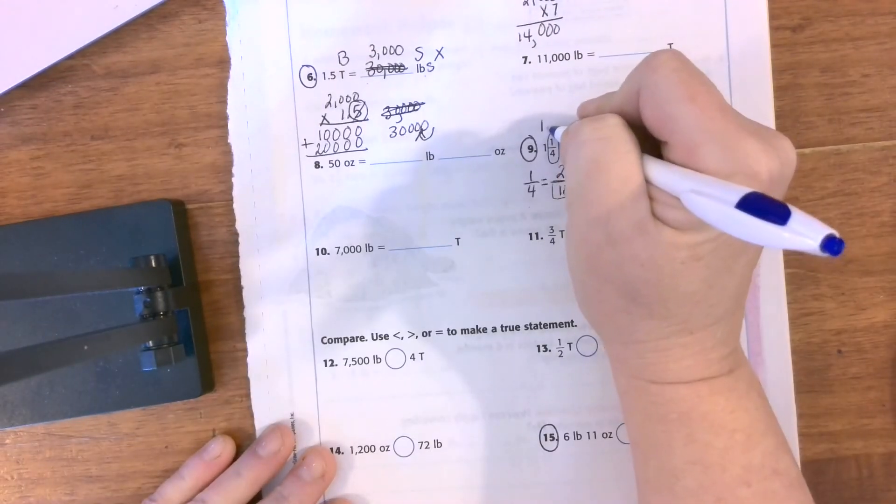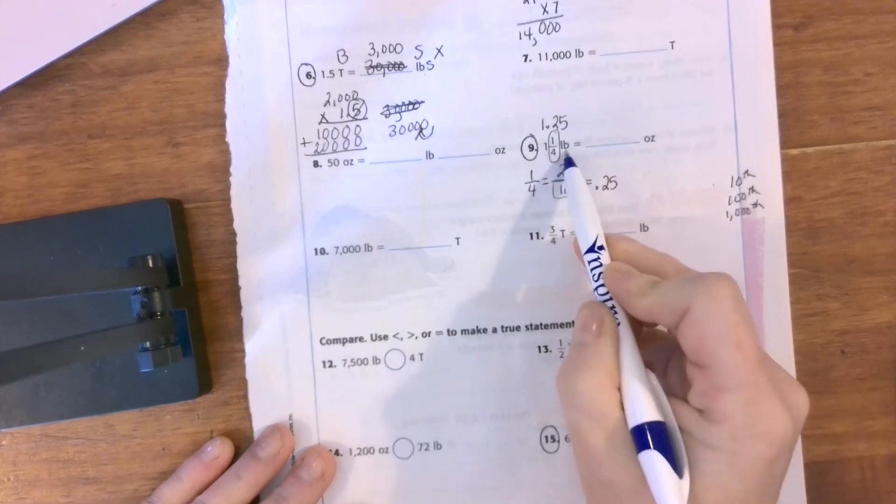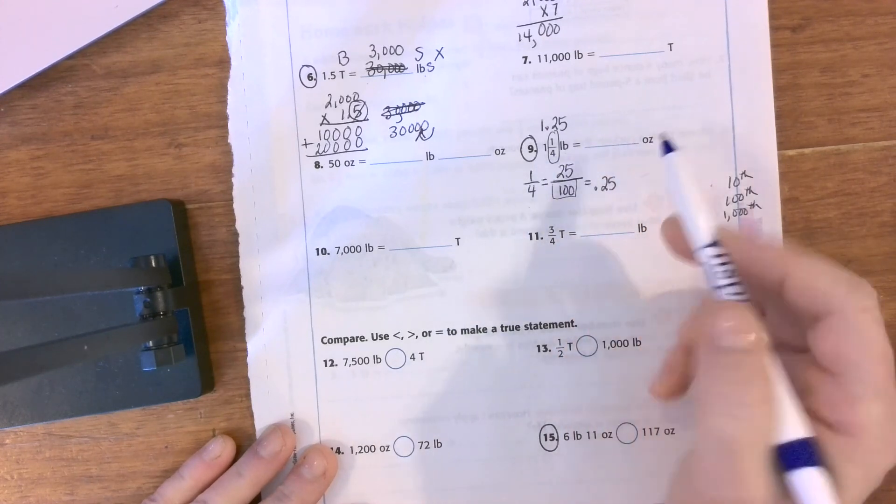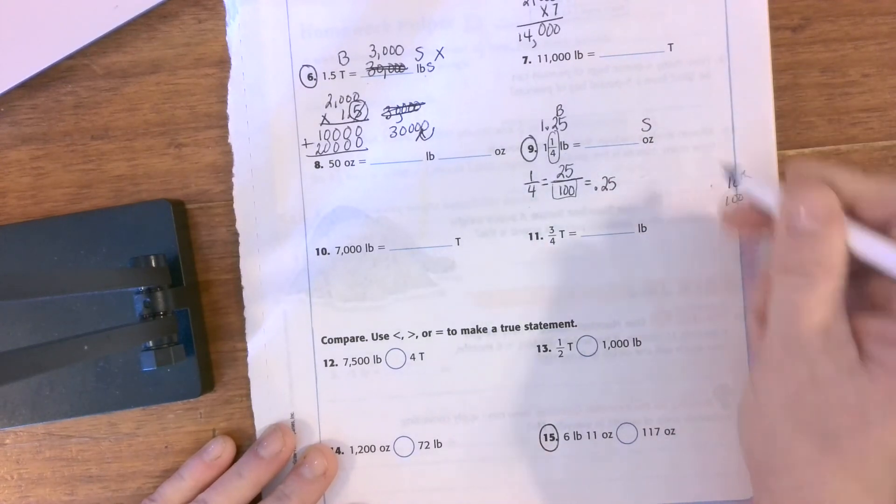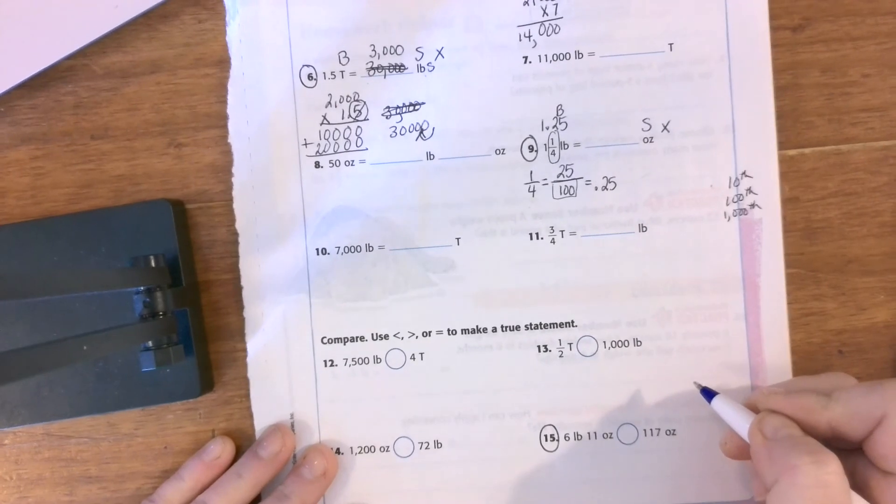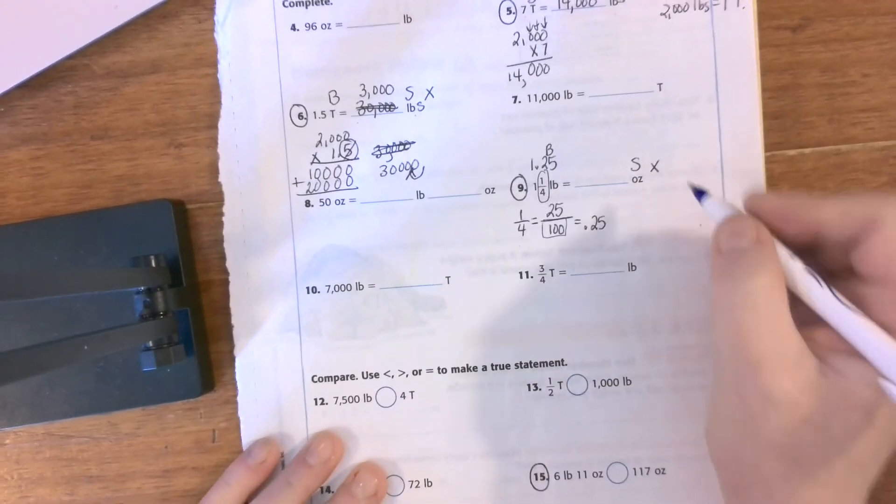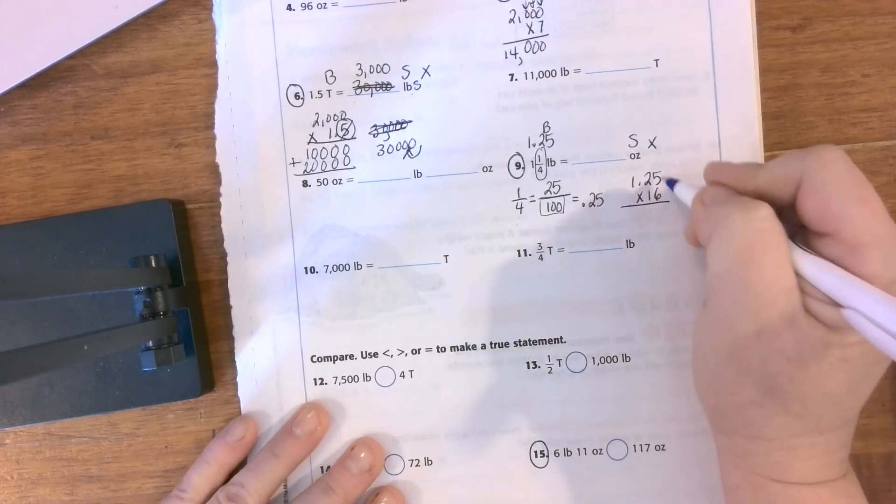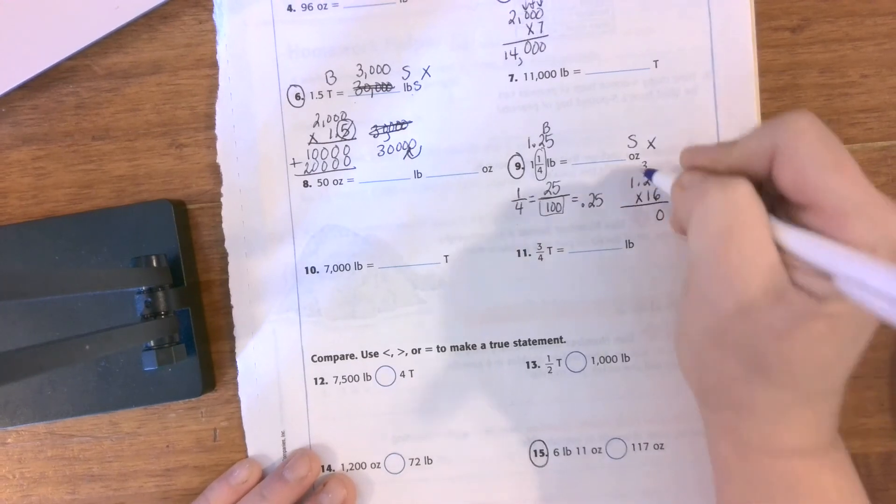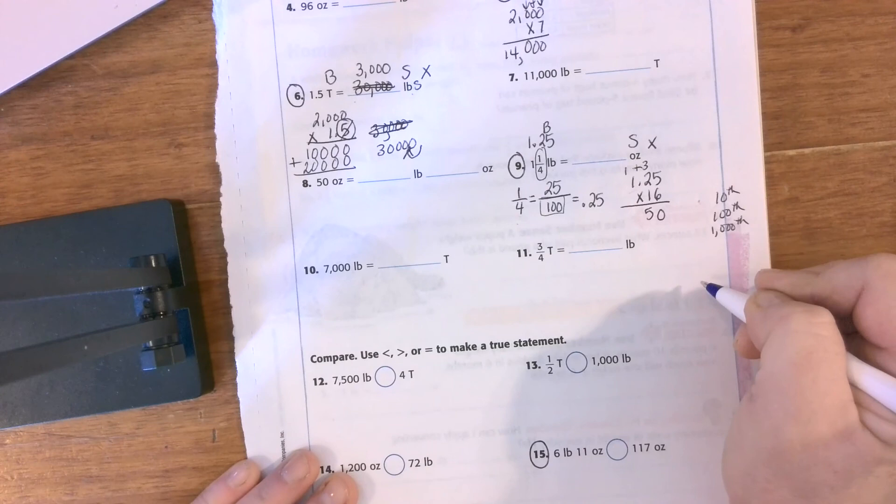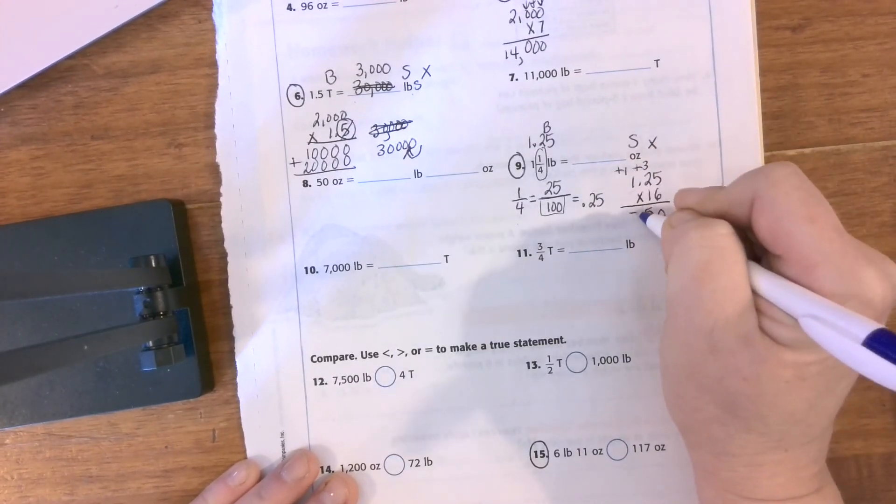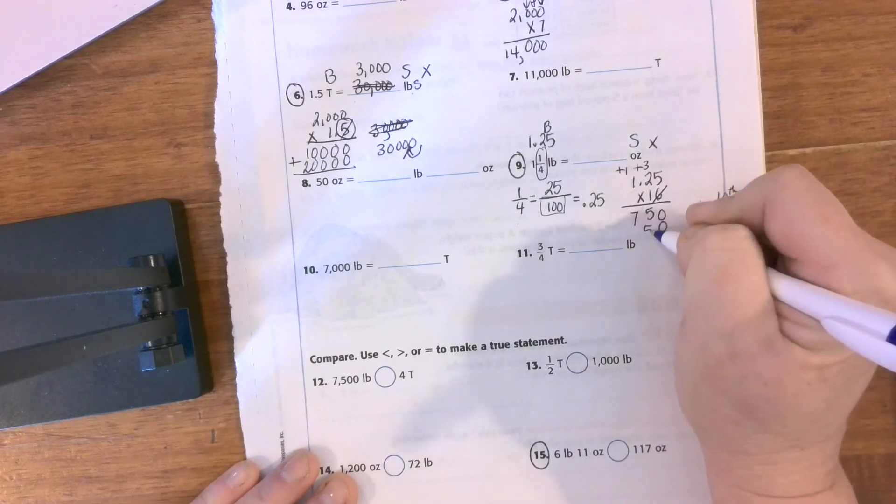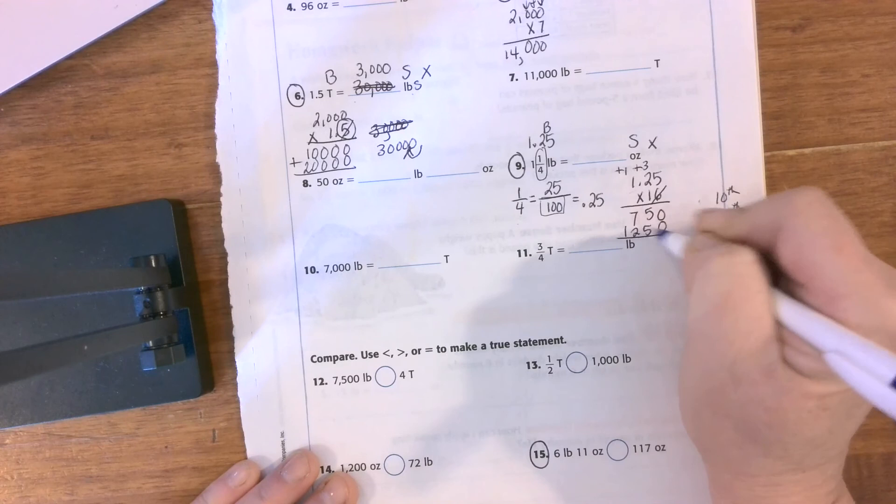Now I have my number 1.25. I'm going pounds to ounces, big to small, which means I'm going to multiply. My formula says sixteen ounces, so I need 1.25 groups of sixteen. Six times five is thirty, carry your three. Six times two is twelve, plus three, fifteen. Carry your one. Six times one is six, plus one is seven. Next place value, add a placeholder. One times five is five. One times two is two. One times one is one.